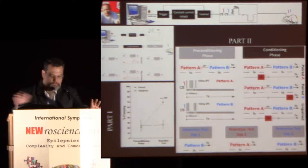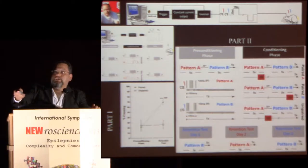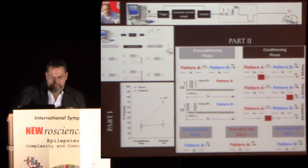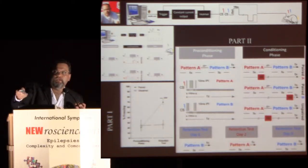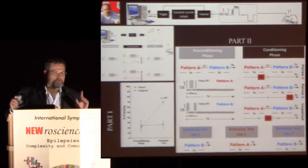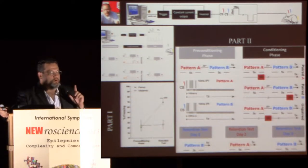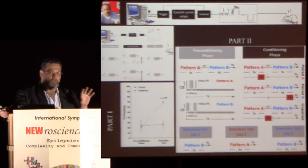Looking at the different patterns: the first case is 1, 0, 0, 1, 1, 1, 0, 0, 1; and the bottom case is 1, 1, 1, four zeros, 1, 1, 1. In that 100-millisecond window, we gave the animal two different patterns of stimulation to the basolateral amygdala complex.